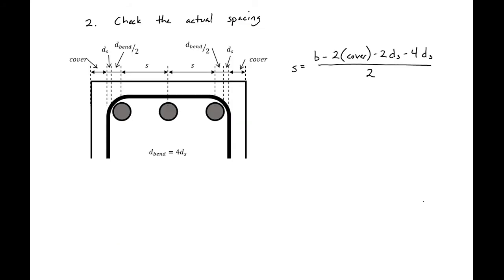We next need to check the actual spacing of our bars. So we can do this by finding the center to center spacing. S is going to be equal to B, the total width of our section, minus two times our cover, minus two times the diameter of our stirrup.